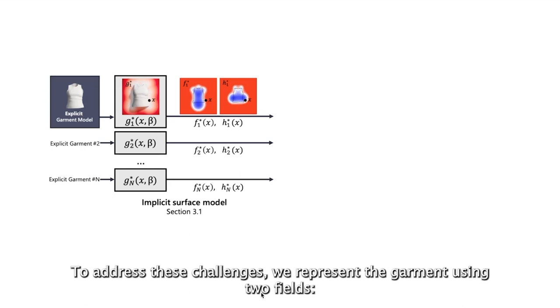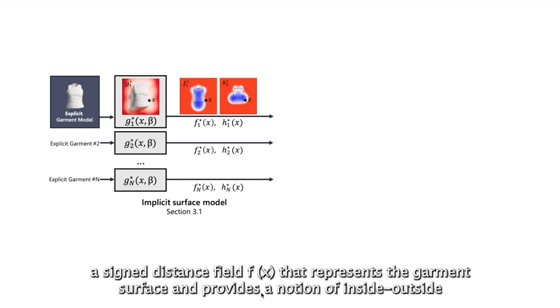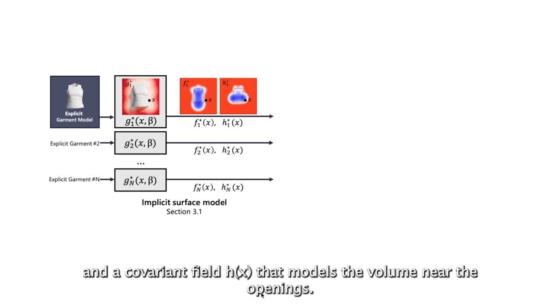To address these challenges, we represent the garment using two fields: a signed distance field f(x) that represents the garment surfaces and provides a notion of inside-outside, and a covariant field h(x) that models the volume near the openings.